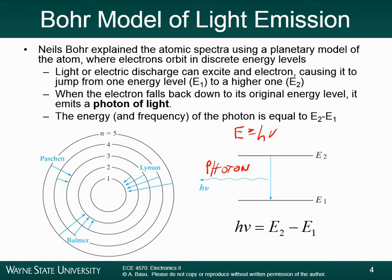This explains why certain atoms only emit certain wavelengths of light — because each atom only has a limited number of energy transitions. If there are five discrete energy levels, there's a limited number of transitions. You can go from energy level two to one, three to one, four to one, five to one — that's one series. Then you have another series ending at energy level two: three to two, four to two, five to two. And another set of transitions ending at energy level three: five to three, four to three.